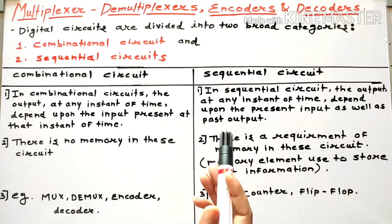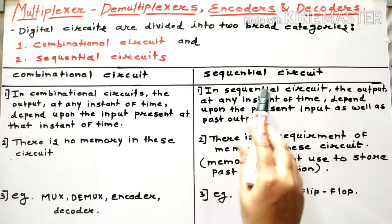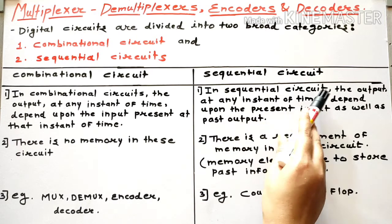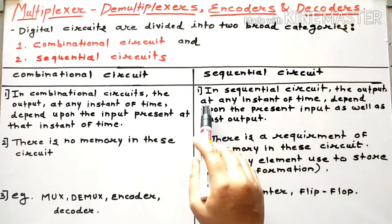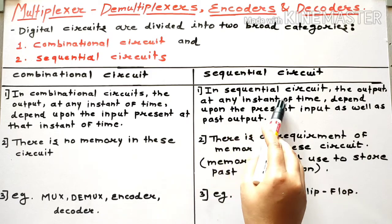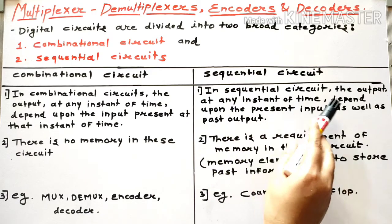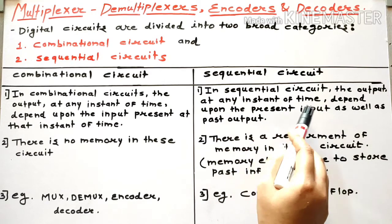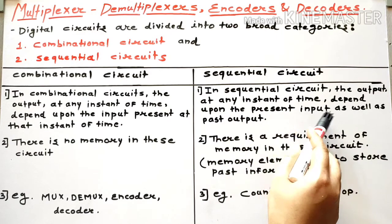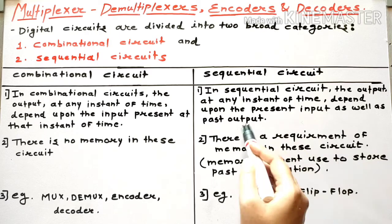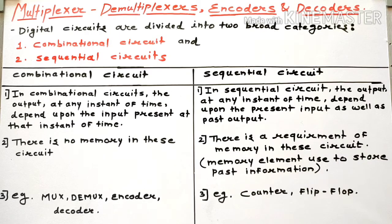In a sequential circuit, the output at any instant of time depends upon the present input as well as the past output. So the output is not only dependent upon the present input, but also upon the past output.